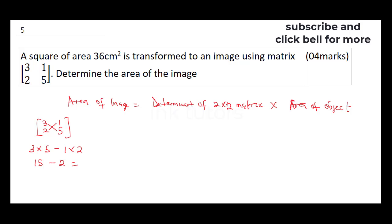Our determinant is going to give us 15 minus 2, which gives us 13. So having gotten our determinant, our area will be 13 multiplied by the area of the object, 36 cm². When you multiply this, it gives you 468 cm². So as easy as that, you can also solve that question.